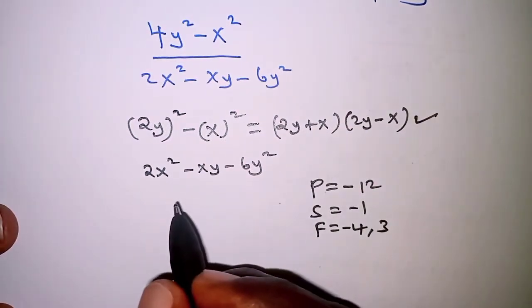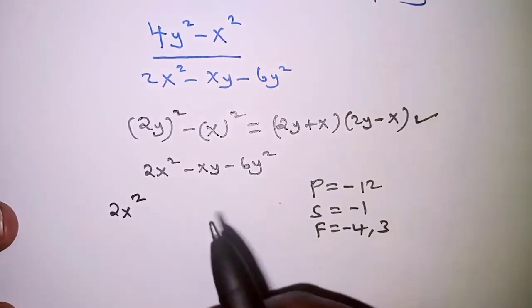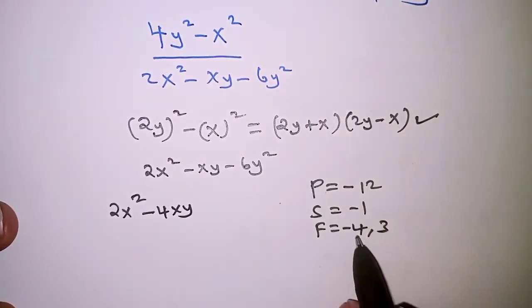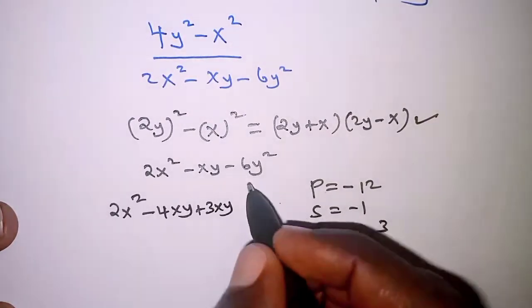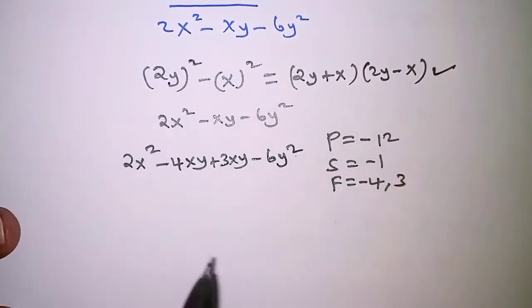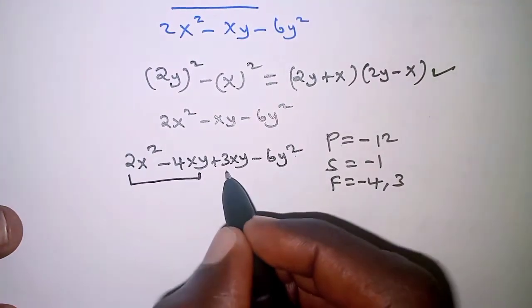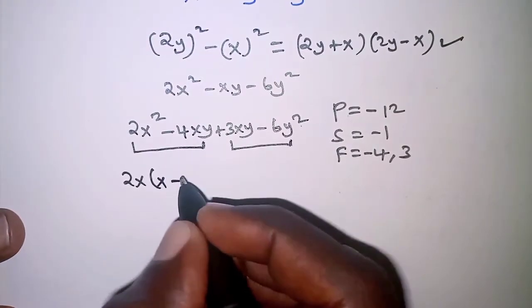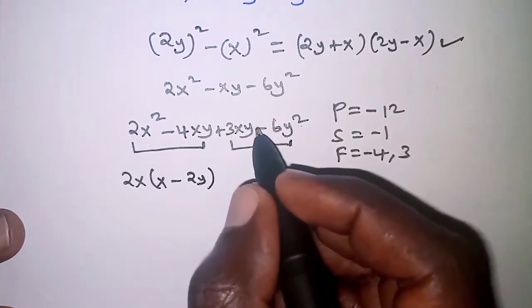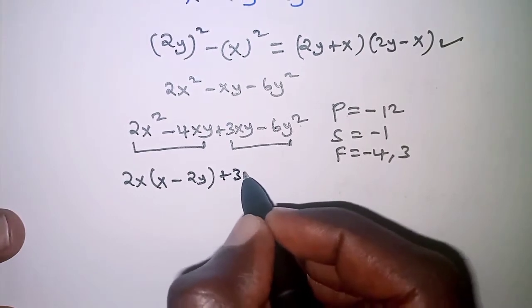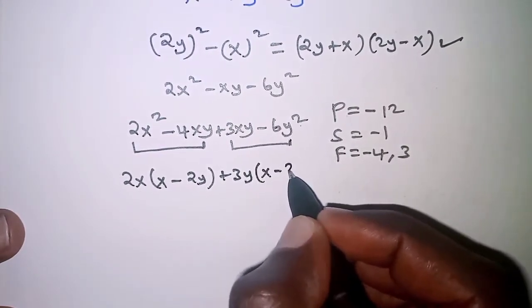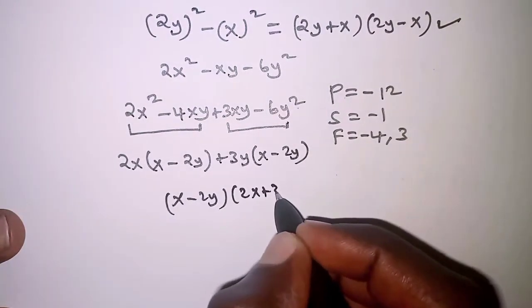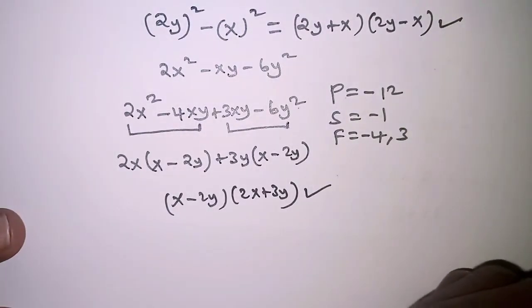We rewrite the expression as 2x² - 4xy + 3xy - 6y². Next, we factorize by grouping: the first pair has common factor 2x, giving 2x(x - 2y), and the second pair has common factor 3y, giving 3y(x - 2y). This finally gives us (x - 2y)(2x + 3y), so we have factorized the denominator.